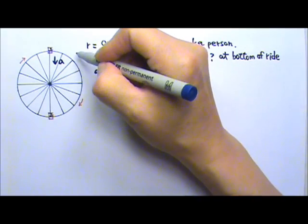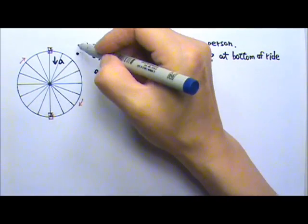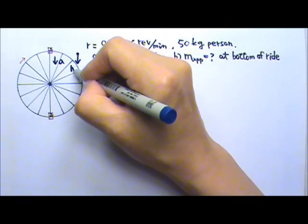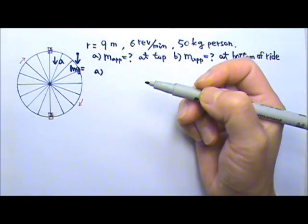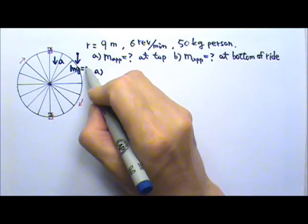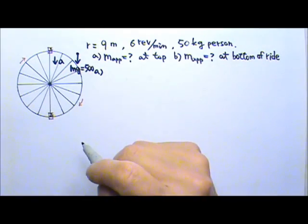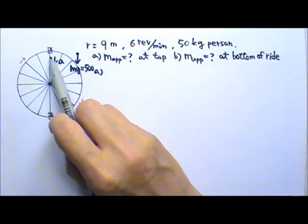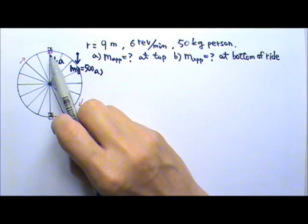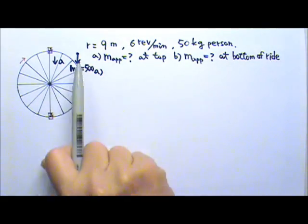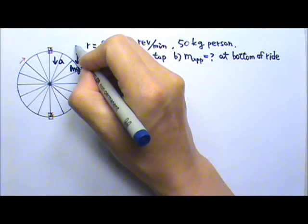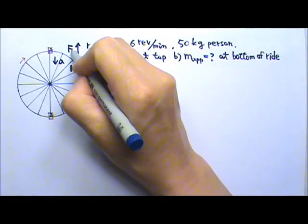And then we draw the force diagram. For the person up there, you have, of course, the Mg, the non-contact force. A 50 kg person, the Mg would be 500 N. The person is touching the seat, so the seat gives the person normal force. And the normal force goes upward.